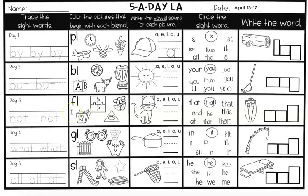Color the pictures that begin with each blend — F-L. We have floss, puzzle, triangle, flower. Two of them start with F-L — floss and flower. For the vowel box, this is a cat — write the vowel sound you hear. Circle the sight word T-H-A-T — 'that.' There are three more that need to be circled in addition to this one. And this is a picture of a corn cob — write what you hear in the boxes.